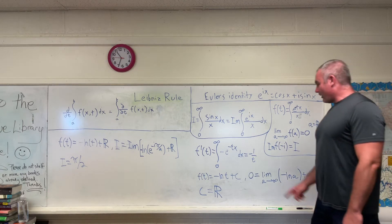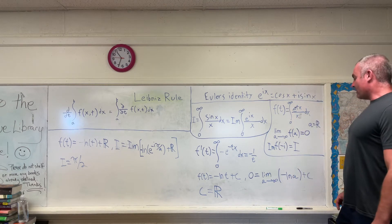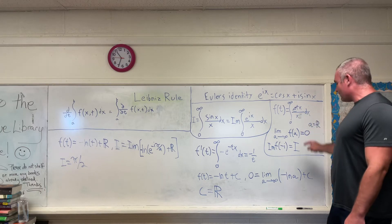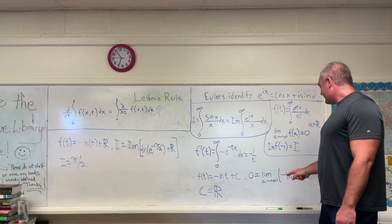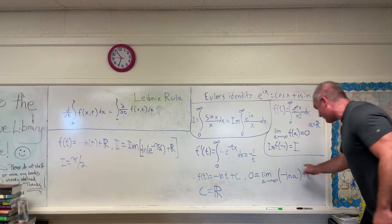And then therefore, f of t will be equal to negative natural log t plus c. And then as we noted up here, you will get 0 if you plug in a into our function and then let a approach infinity. And that's stated right here.